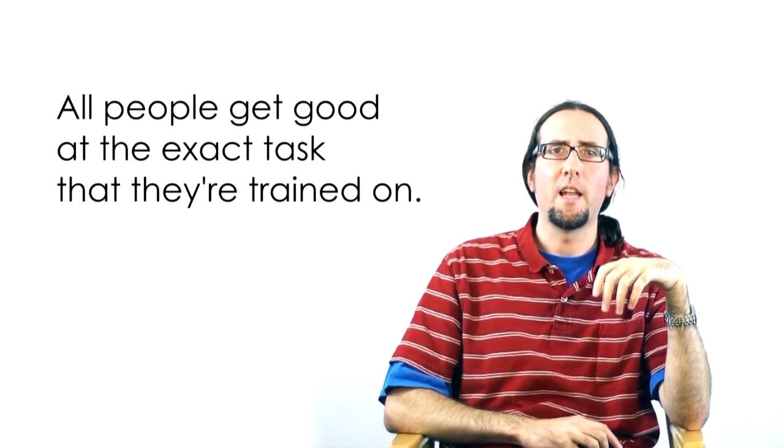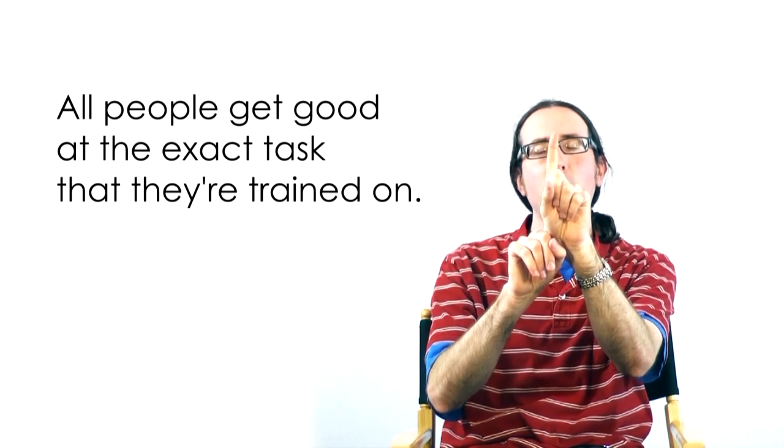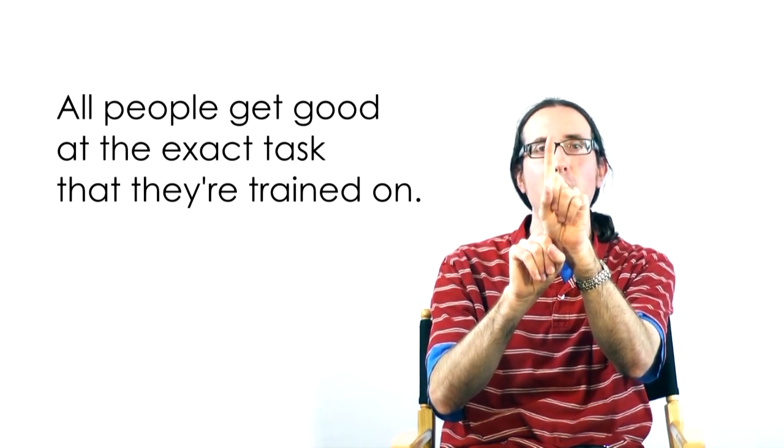However, what we found is that all people get good at is the exact task that they're trained on. So if you're trained on doing this task where the lines are vertically aligned, and you have to say is this to the left or to the right, you can get very good at it. But if we make a minor change, we just reorient the line so now they're horizontal, and now you have to say is this above or below this line over here, you basically start all the way back over. Everything that you improved at doing the vertical lines—all we do is rotate them 90 degrees and everything has to start all over again.